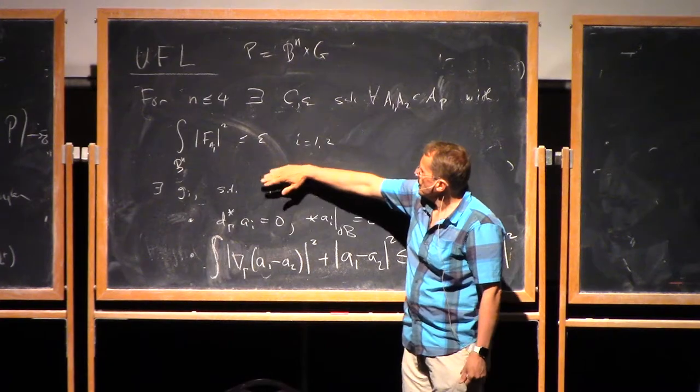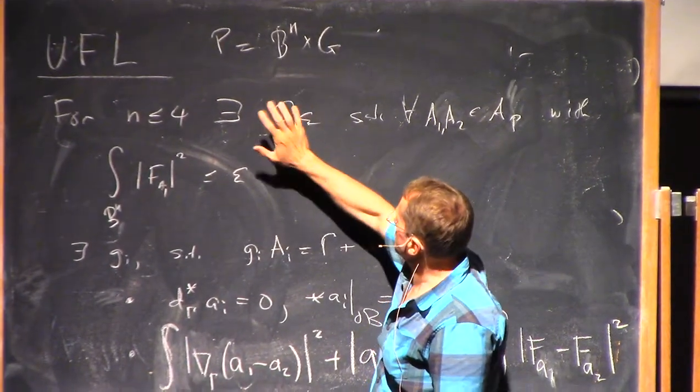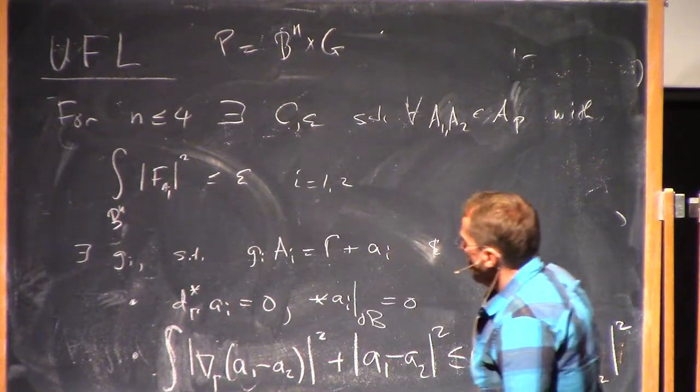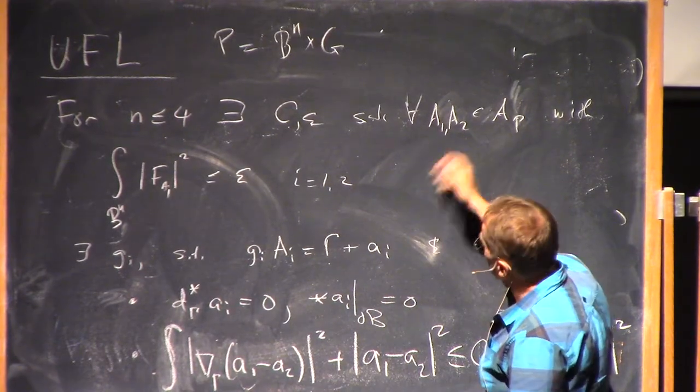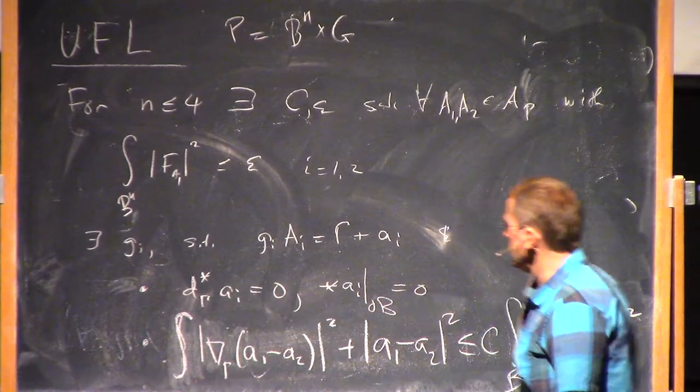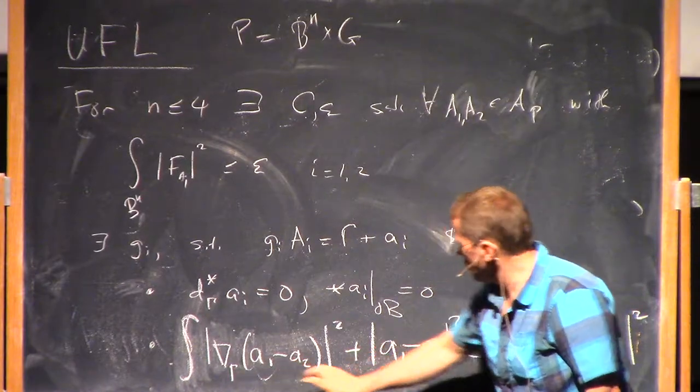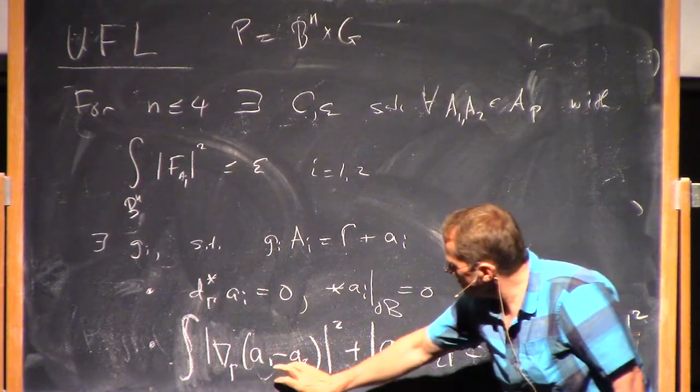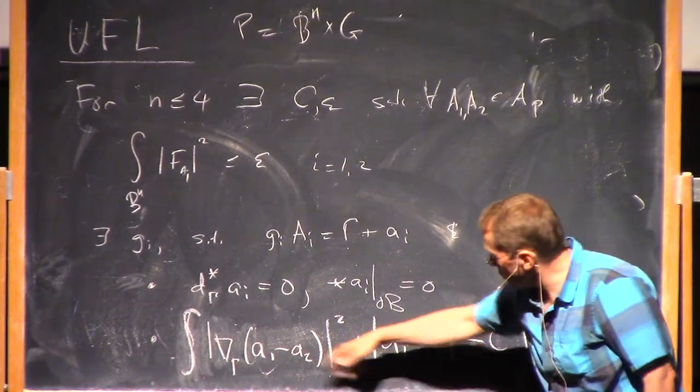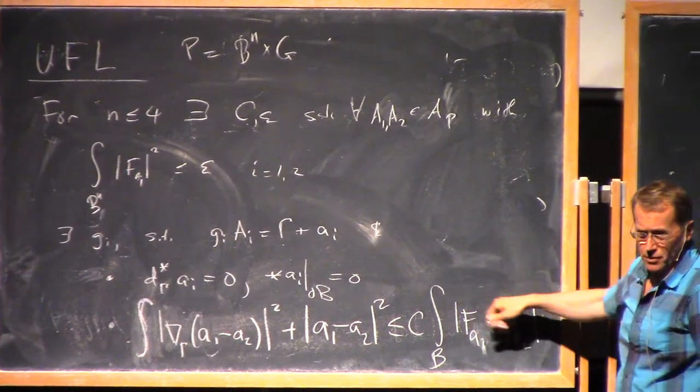But it's easy to prove using the same techniques. If you take a pair of connections, each of which has small curvature, so there's some bound that Uhlenbeck's argument gives you, epsilon, then you can put both of them into this good gauge, Coulomb gauge, with this boundary condition. But the interesting thing about looking at a pair of connections is that you can prove that the L^2_1 norm of the difference of the connections is controlled by the difference in the L^2 norms of the curvature.